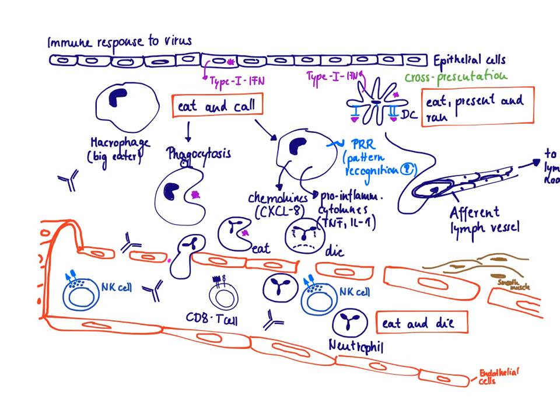Epithelial cells are equipped with pattern recognition receptors. Since the virus is going to be in the cytosol, this cell will respond with its cytosolic pattern recognition receptors — for example, a NOD-like receptor (NLR) — and react with the production of type 1 interferon.